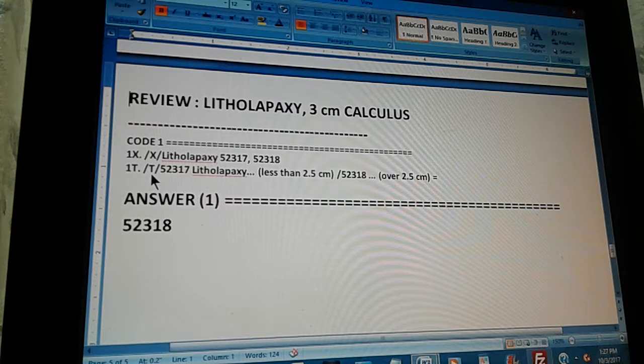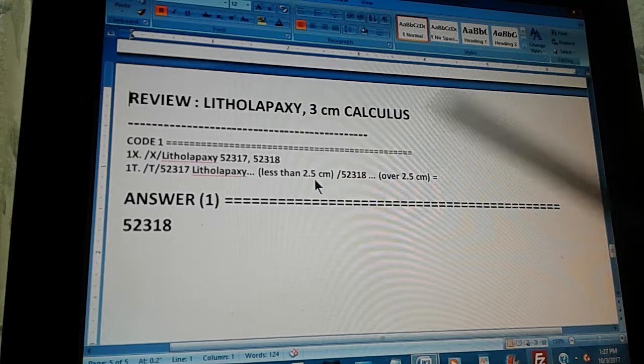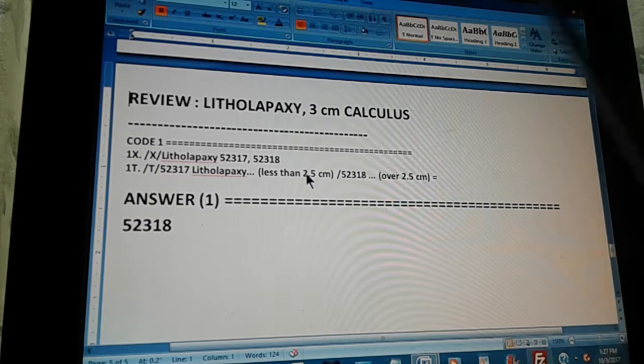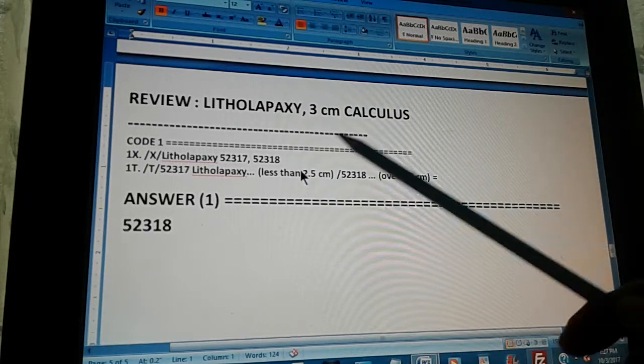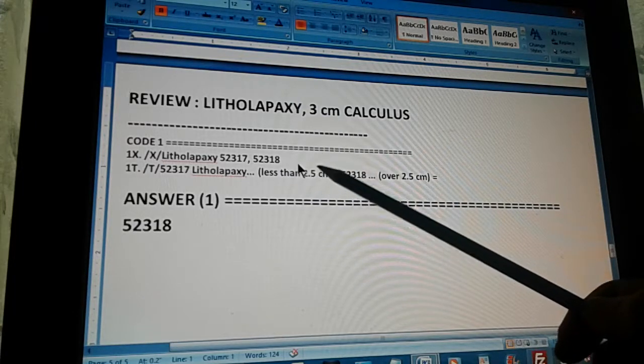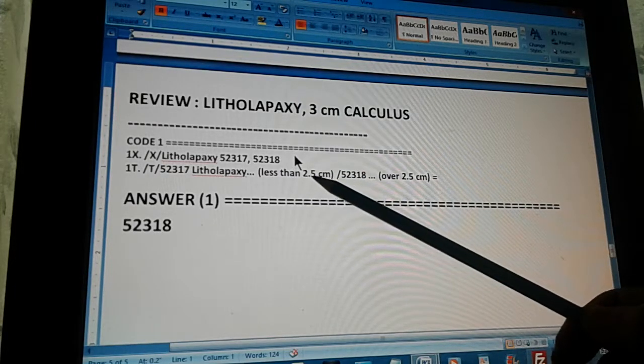The code through the tabular is found like this. First, you go to the tabular. Then you go to 52317. Litholapaxy, less than 2.5 centimeters. So, these two codes, the only difference is the size of the calculus. The first one is for if the size is 2.5 or less.